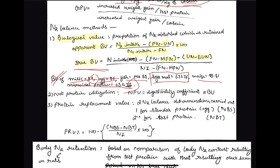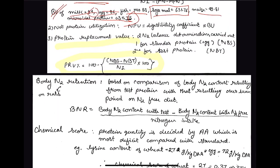Next is Protein Replacement Value. Here we use egg as the standard protein, since it has the highest biological value. Two nitrogen balance determinations are carried out — one with the standard protein and one with the test protein. The formula is: 100 minus [(nitrogen balance in standard protein − nitrogen balance in test protein) / nitrogen intake × 100], giving the Protein Replacement Value.